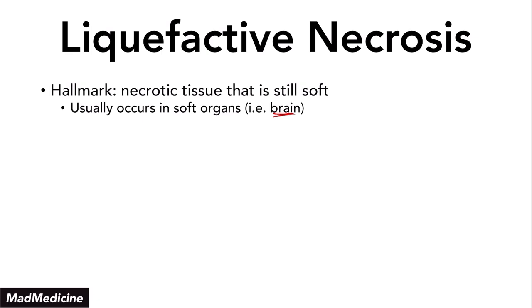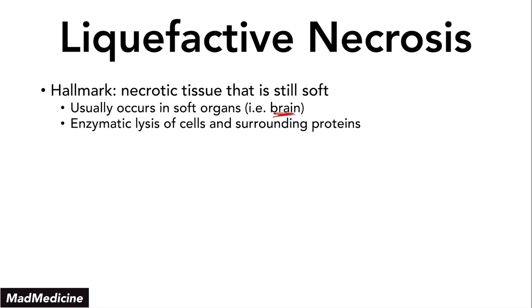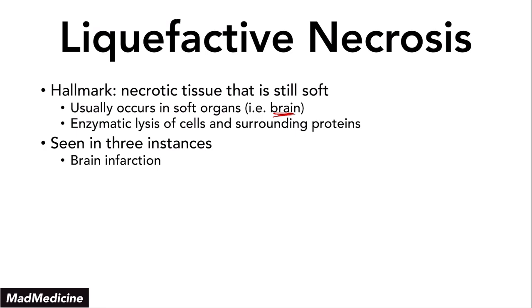In liquefactive necrosis, enzymatic lysis of the cells and surrounding proteins causes degradation of the surrounding tissue, leading to loss of the actual cell structure and extracellular structure as well. Usually we're going to see this in three main instances. Number one is brain infarction — when you have ischemia occurring in the brain, you are going to have liquefactive necrosis, which is different than other organs. The majority of other organs will go through coagulative necrosis.